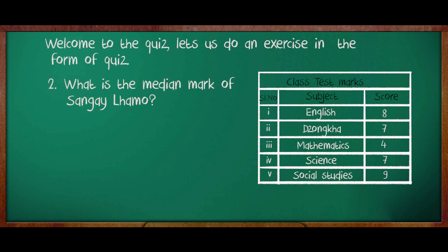Now, question number 2. Again, use the same set of data and find the median mark of Sanghel Lamo. When you find the median, you need to think of the steps — that is, rearranging, then finding the middle number. A: 7, B: 4, C: 8, D: 9. The answer is 7.